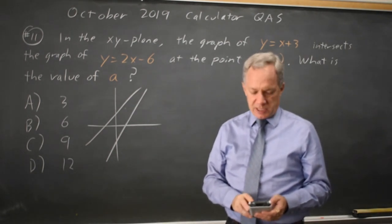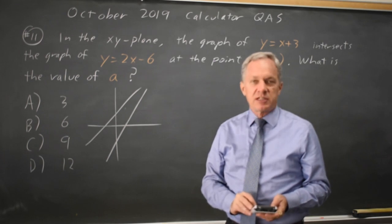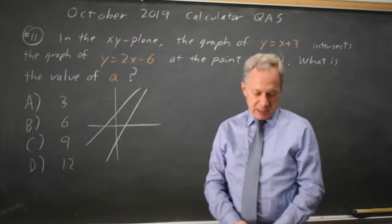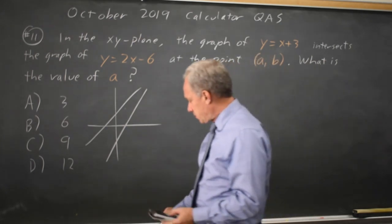So second, trace, or calculate, choice five is intersect, and then I hit enter three times without even looking. And it says my x value is 9, y value is 12.